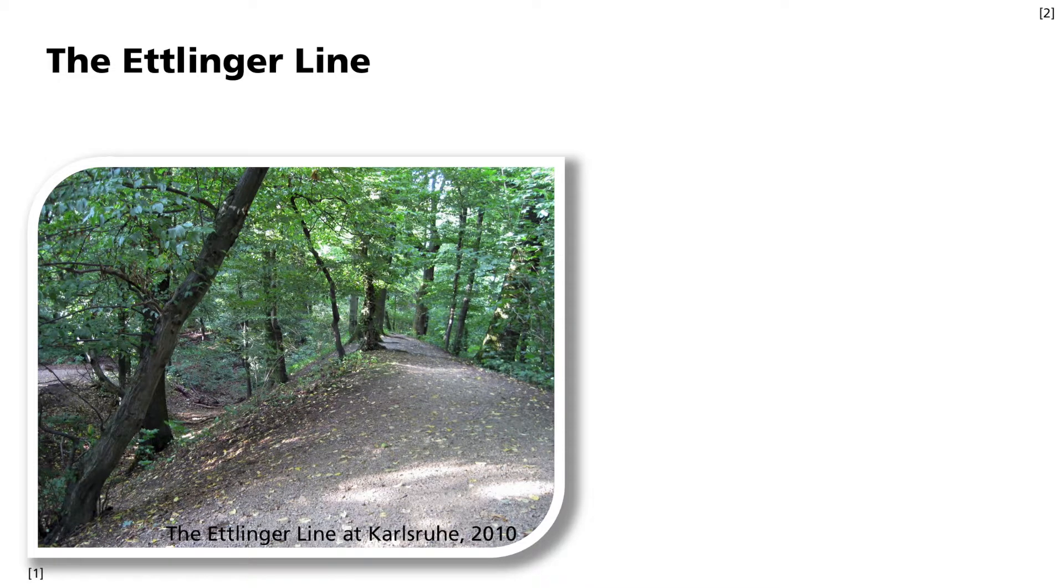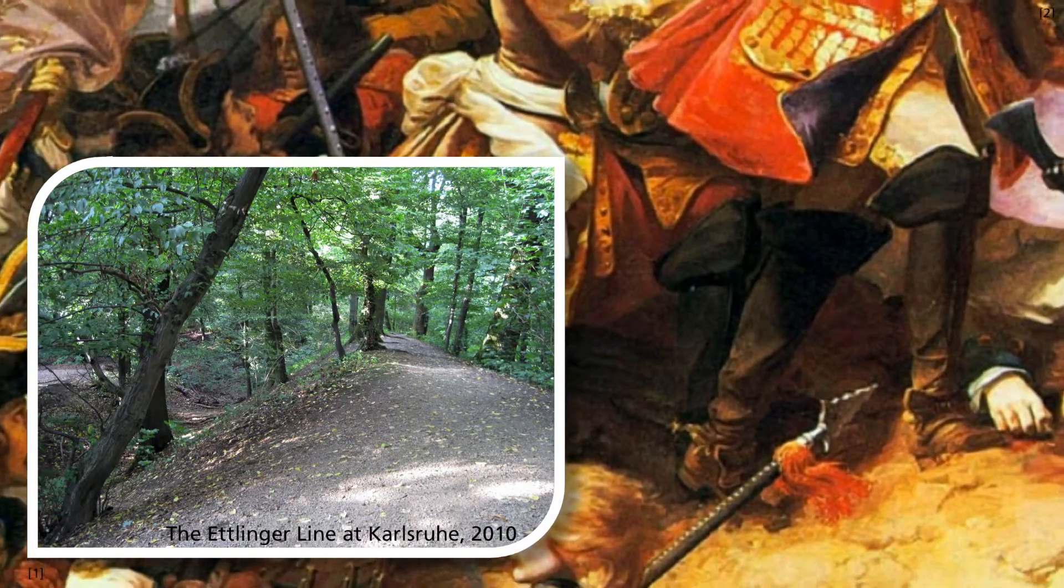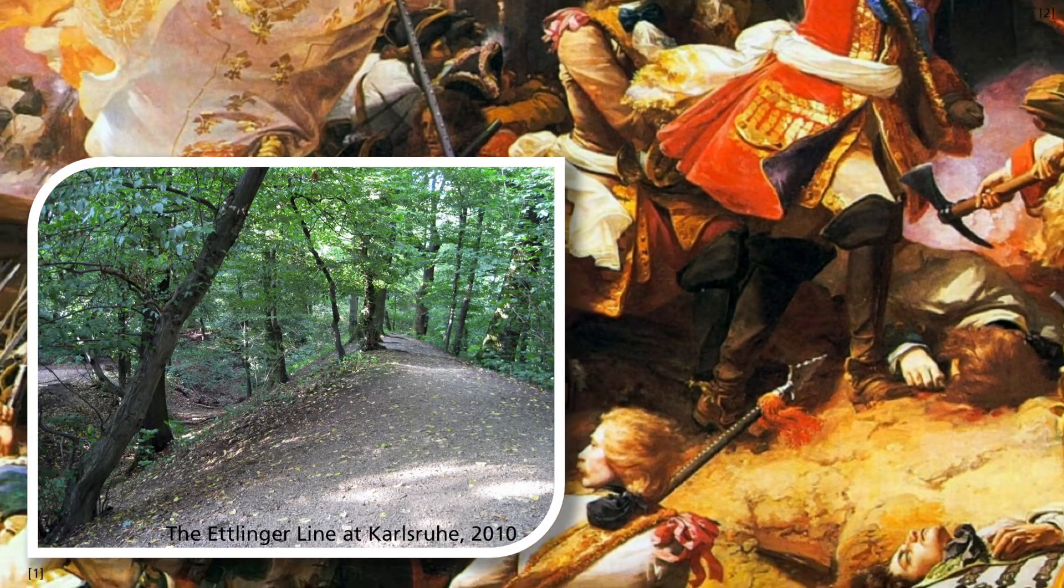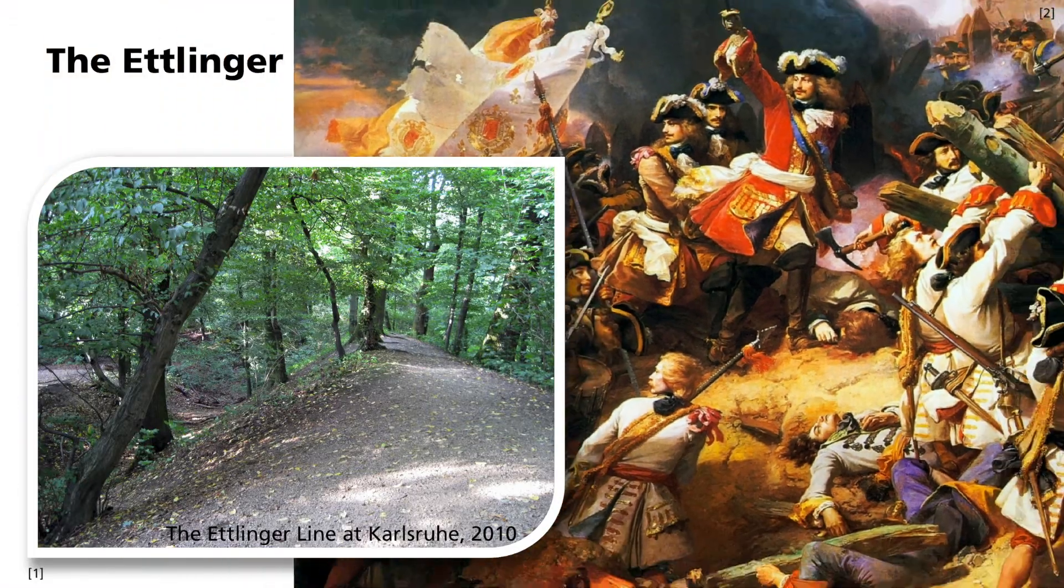In the forest to the south of Karlsruhe in Germany, there are still remains of a fortification wall built in the 18th century. It was constructed in 1707 during the so-called War of the Spanish Succession to stop the French army invading from the southwest.